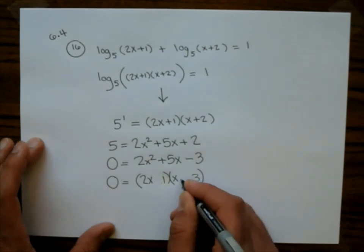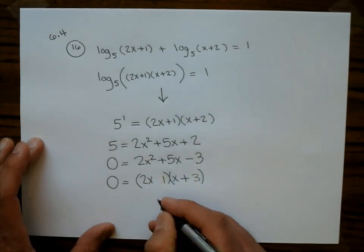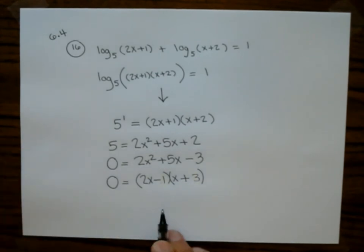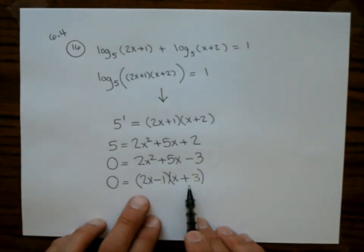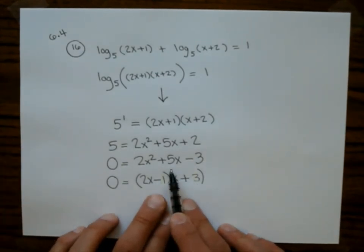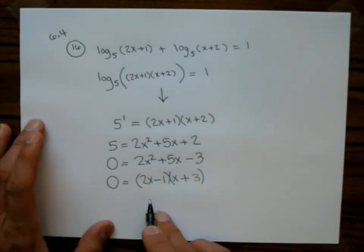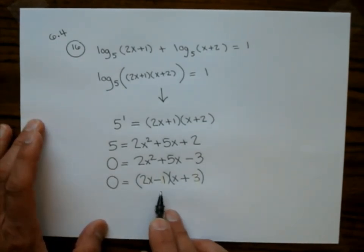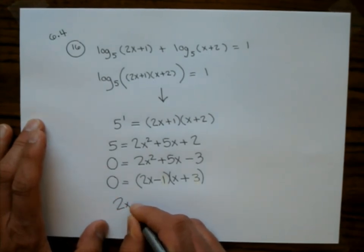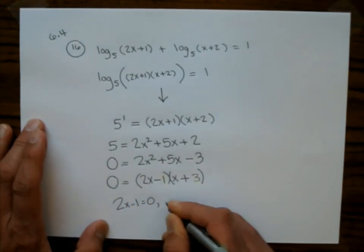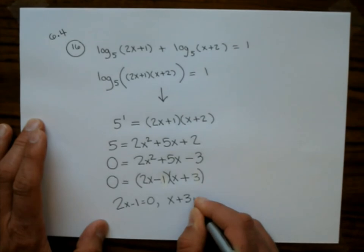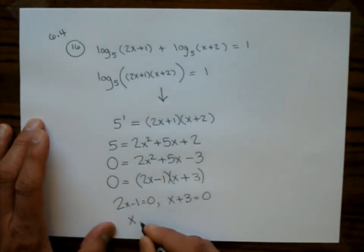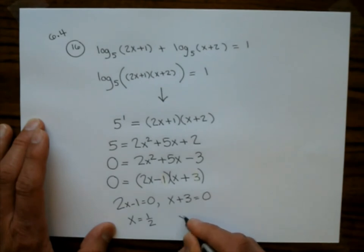Factoring the trinomial: (2x minus 1)(x plus 3) equals 0. Setting each factor equal to zero gives x equals 1/2 and x equals negative 3.